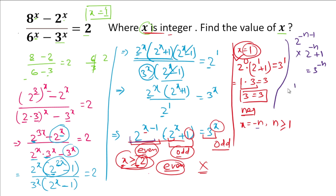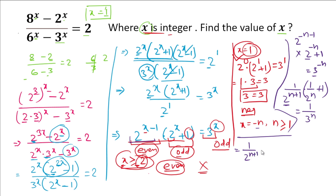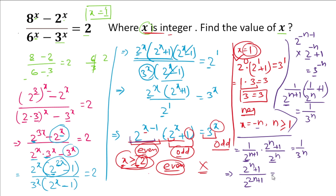Rewriting with positive exponents: 2^(-n) = 1/2^n and 3^(-n) = 1/3^n. So the left side becomes (1/2^(n+1)) · ((1/2^n) + 1) = (1/2^(n+1)) · (2^n + 1)/2^n = (2^n + 1) / 2^(2n+1), equal to 1/3^n.